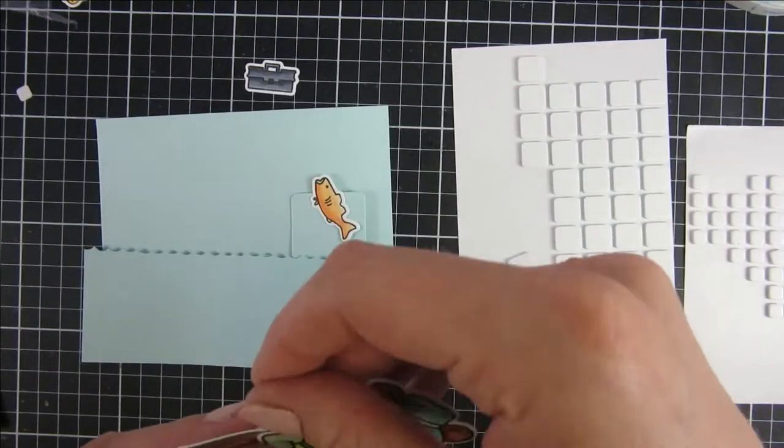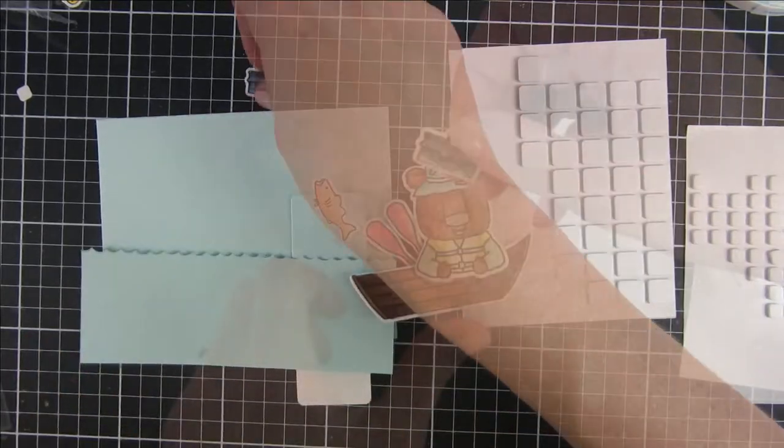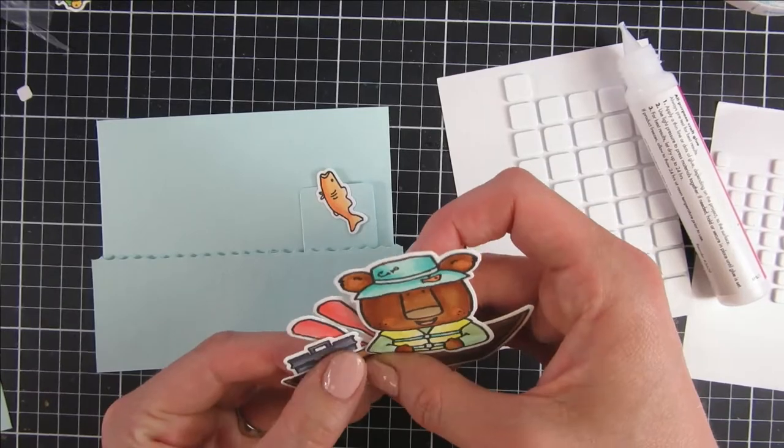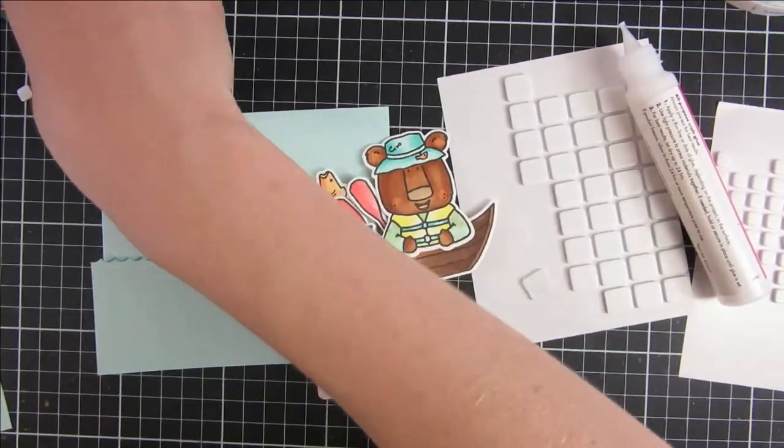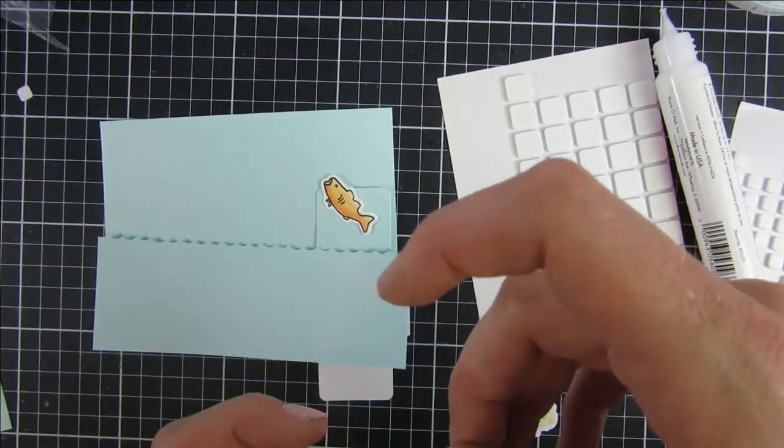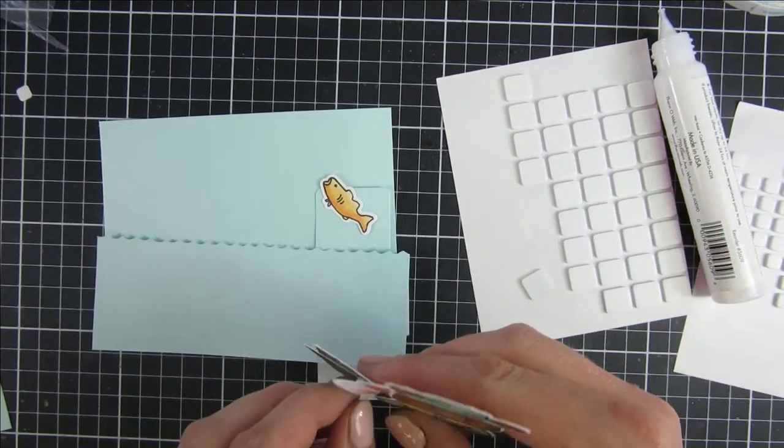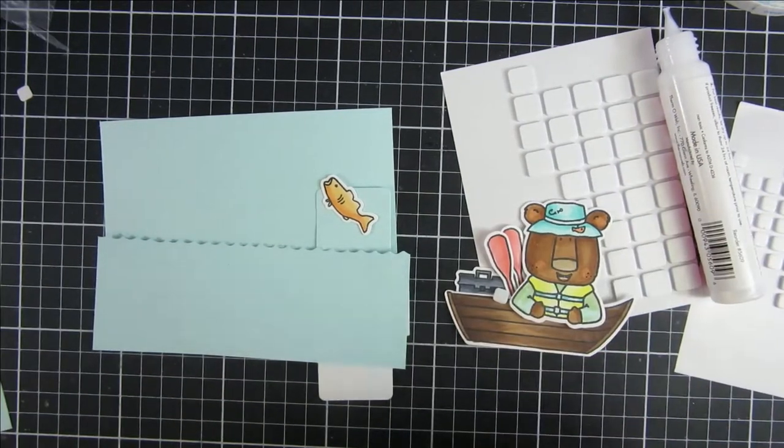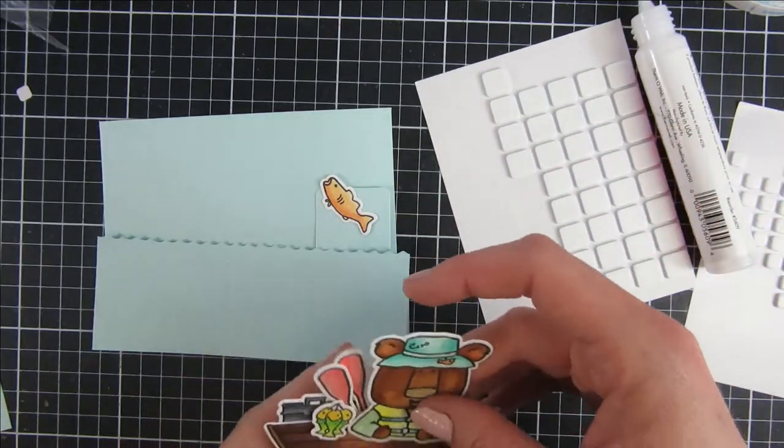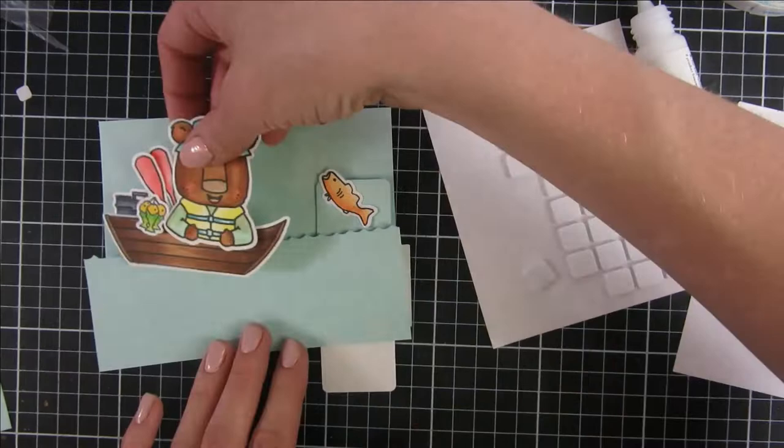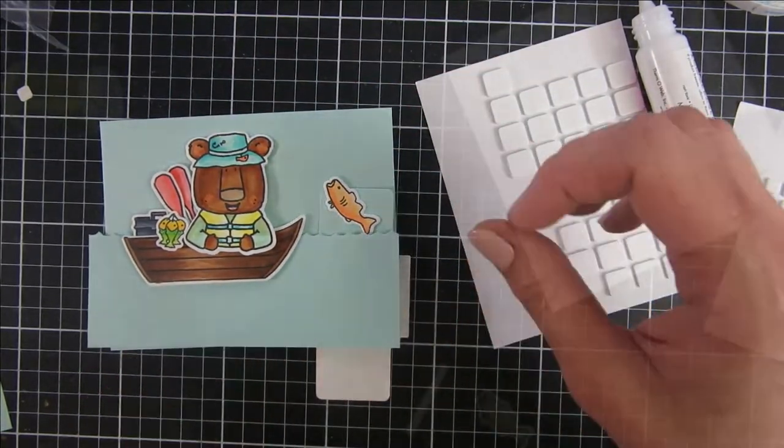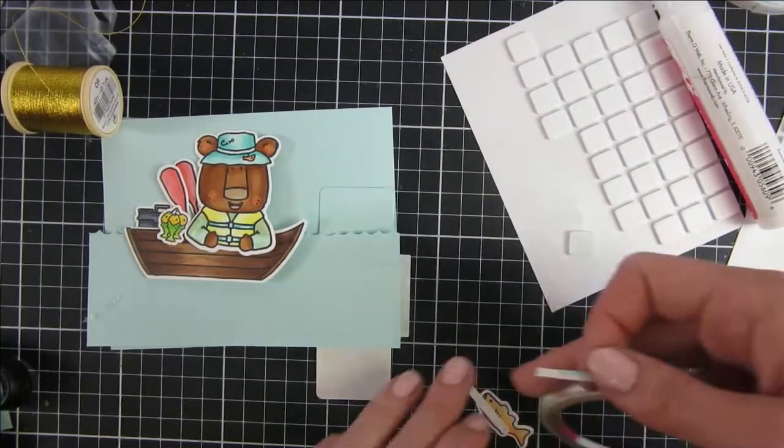Before I do that I'll adhere my bear and everything on top of the boat so I know where everything is going to go and how much space I have left. I took my teal cardstock here and cut the same panel with the waves and everything so I think it looks nicely. You can see he already caught some fishes there so he's a happy happy camper.